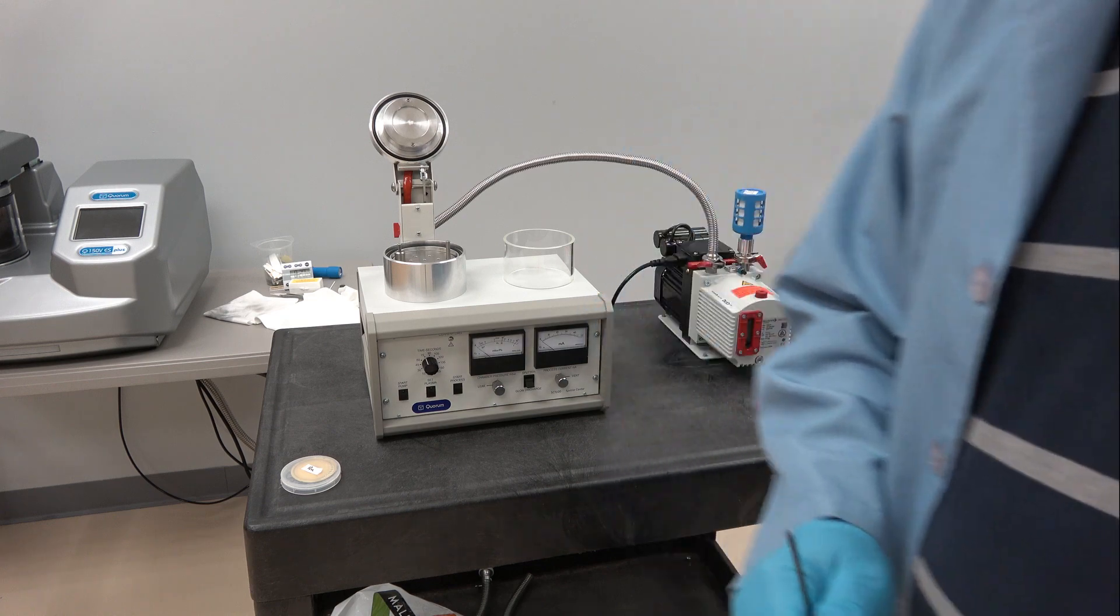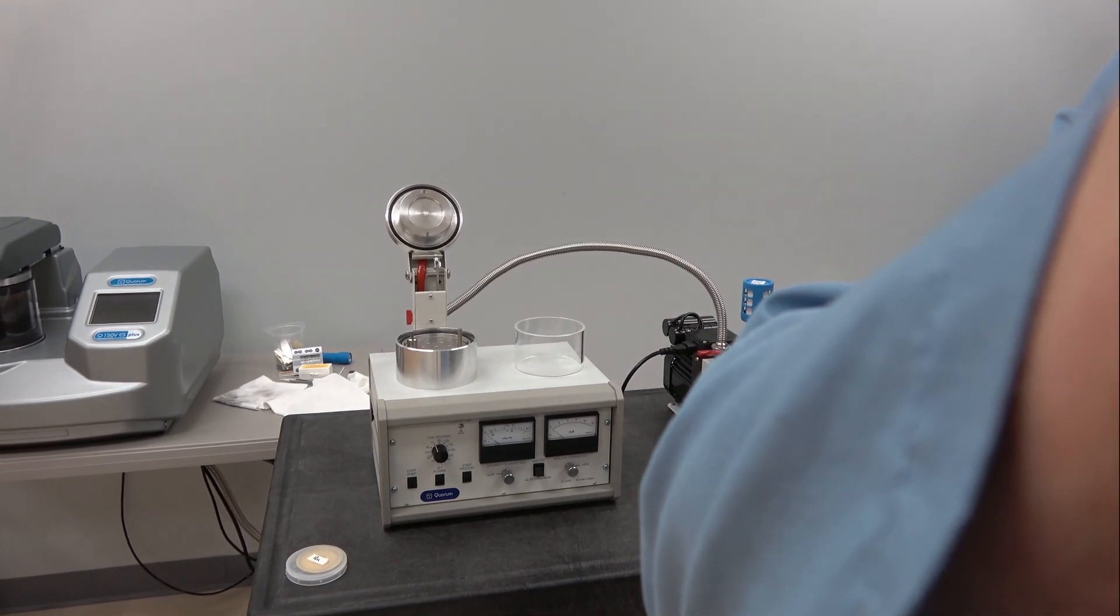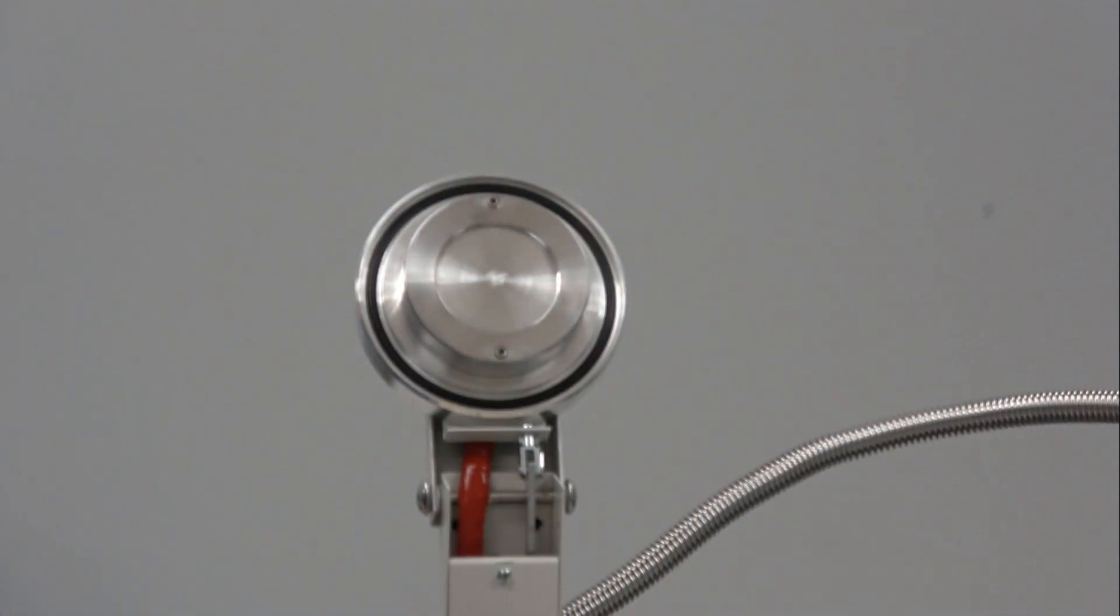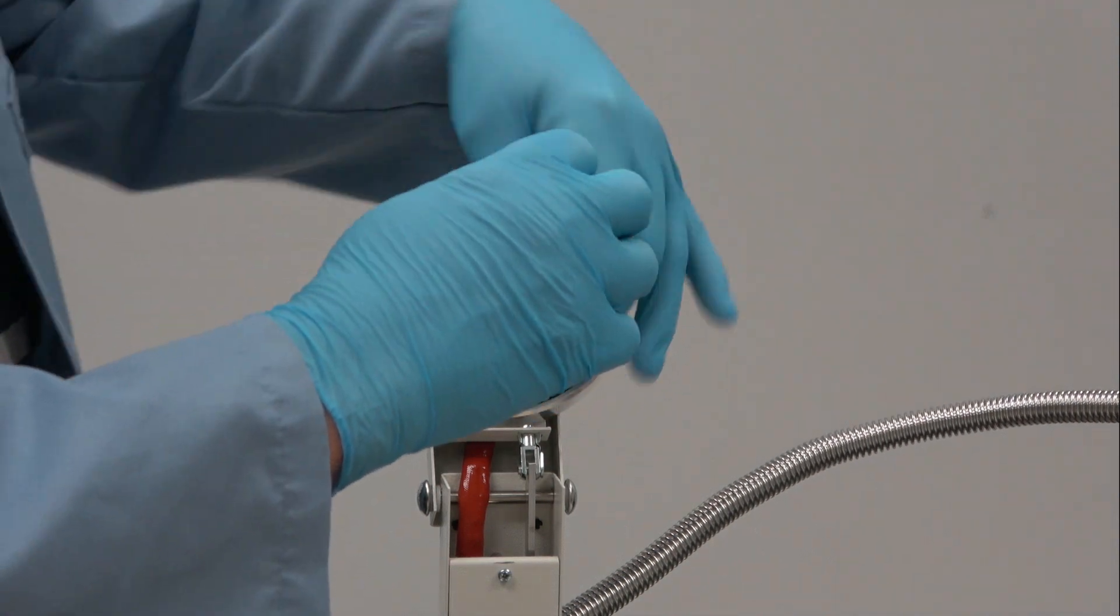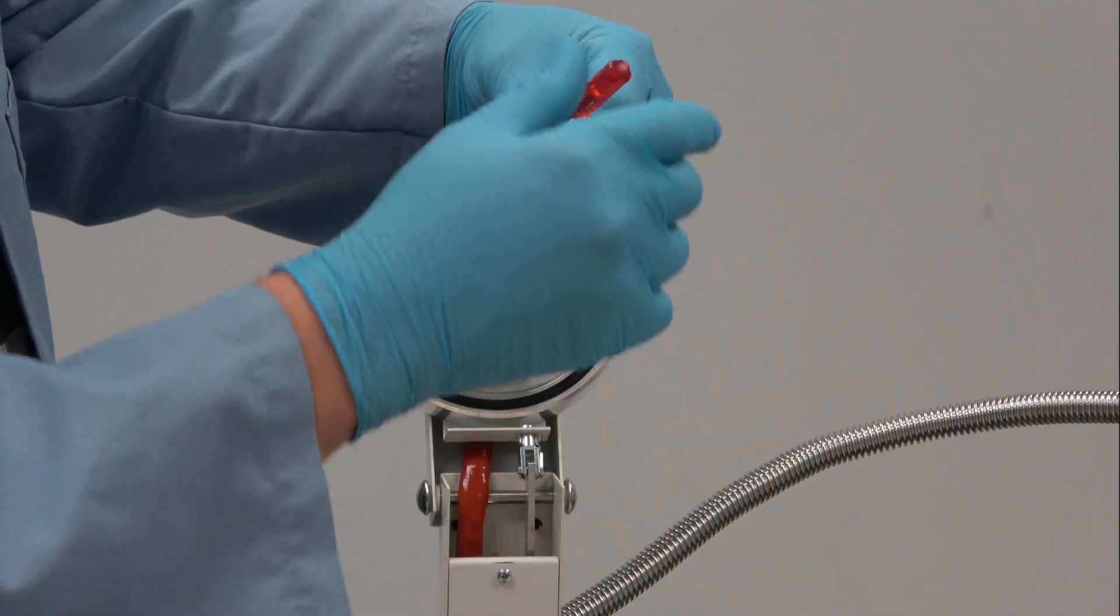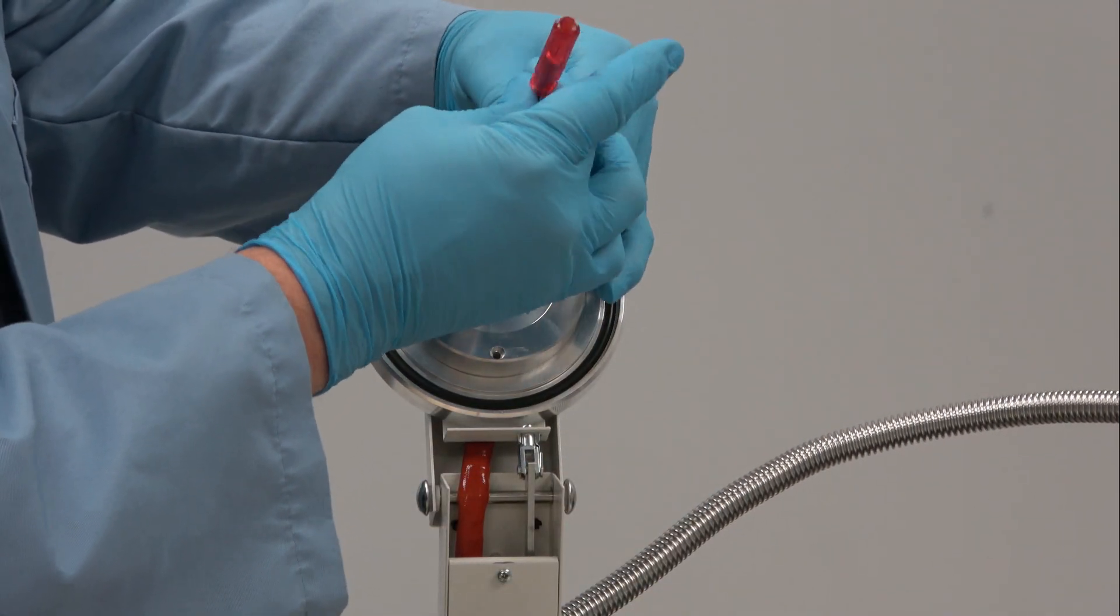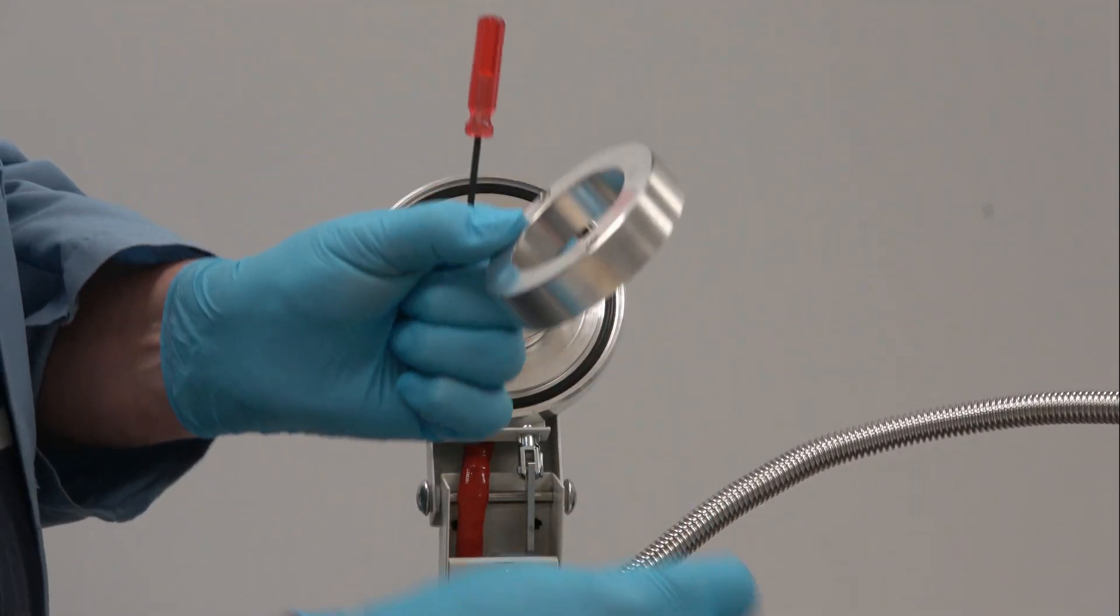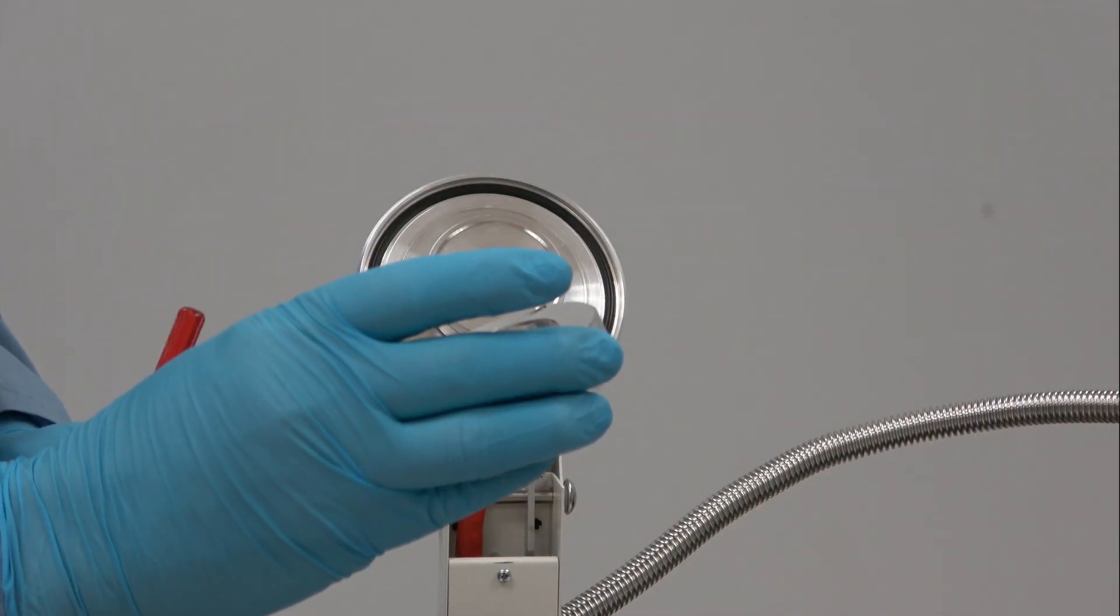So where the confusion begins is here on the sputter head. As you can see, there's two hex head screws to remove. They're 2.5 millimeters. You take them out and you remove the entire shield, which is known as the dark space shield.